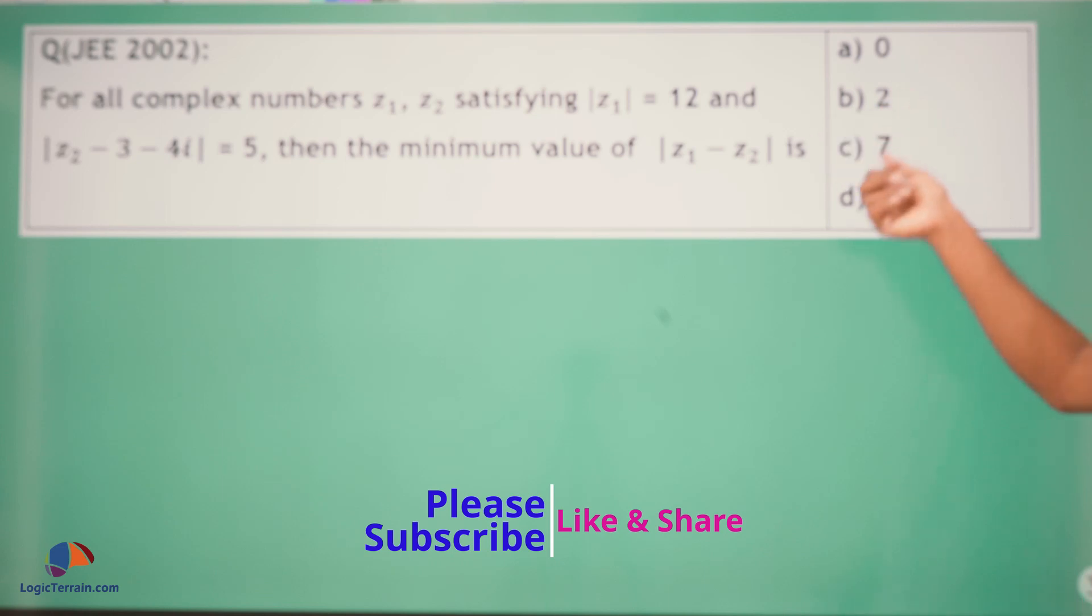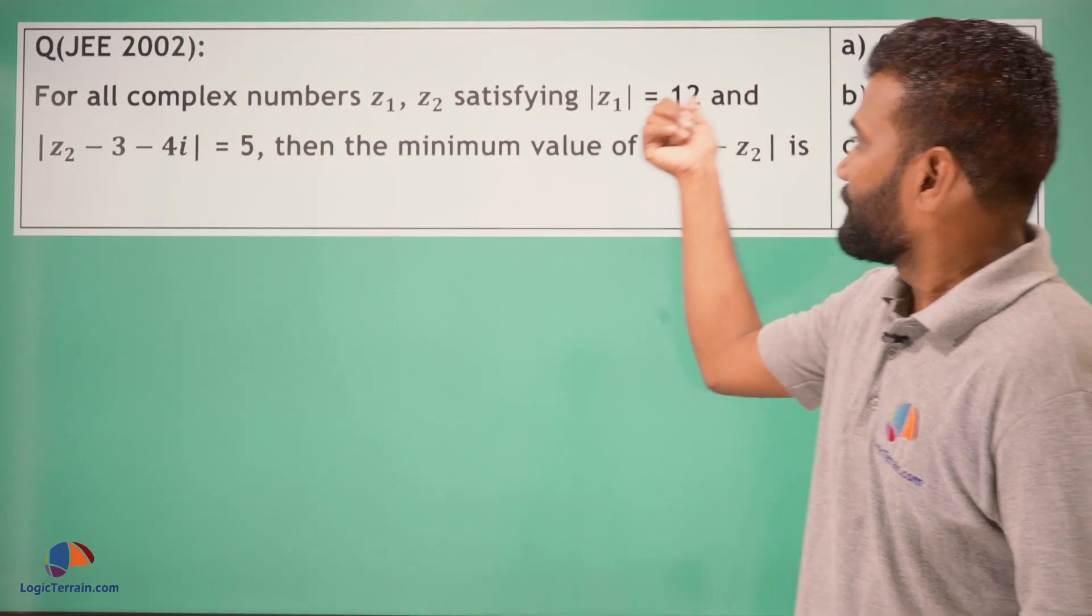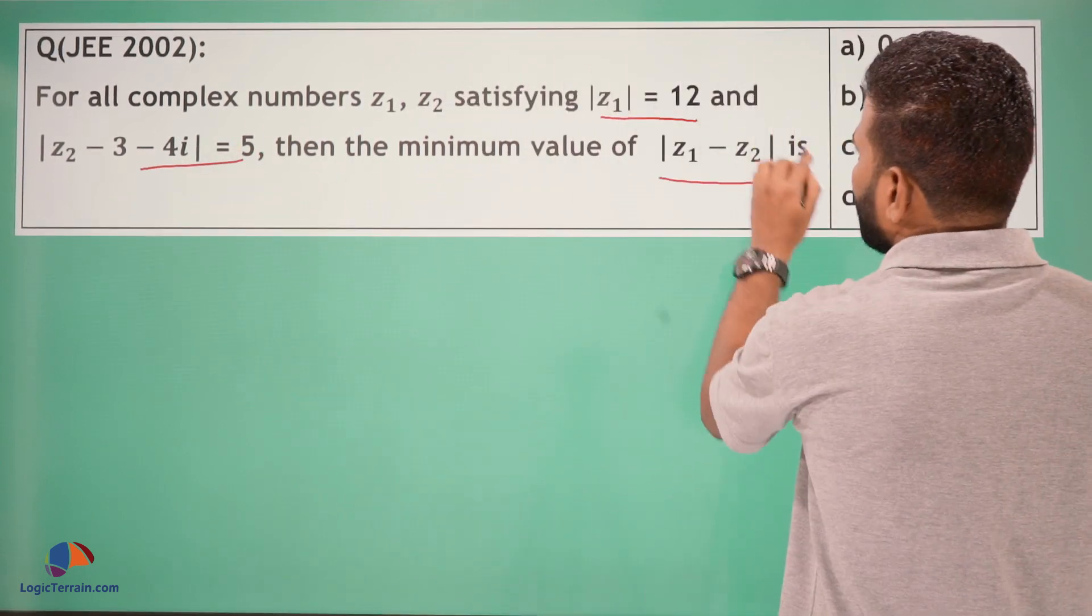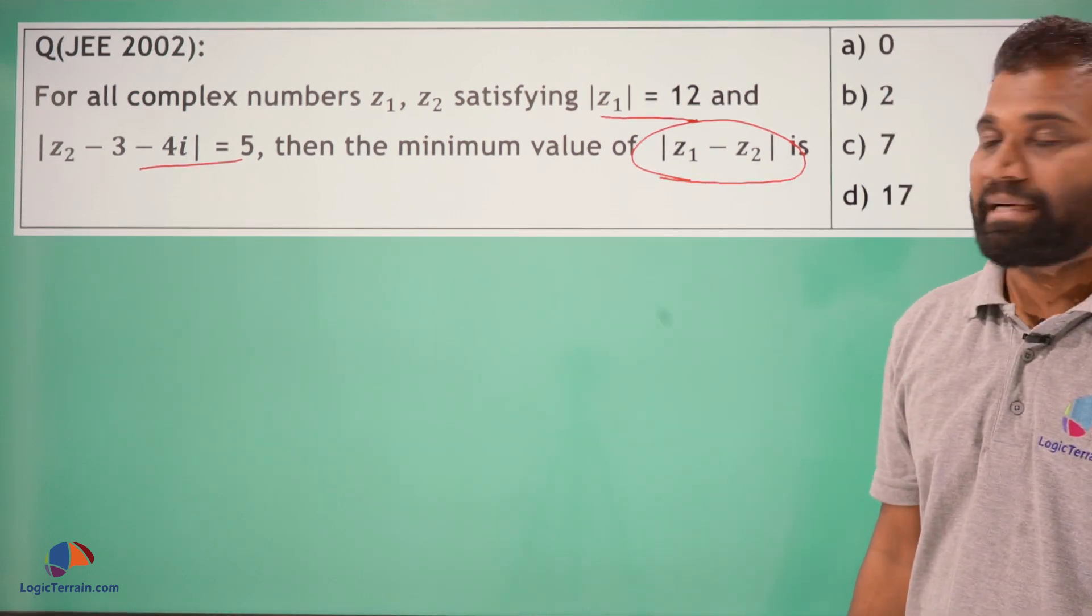A: 0, B: 2, C: 7, D: 17. So given these two values, by making use of these two, we have to find this minimum value.